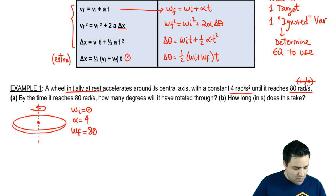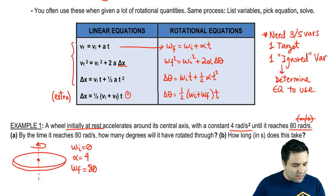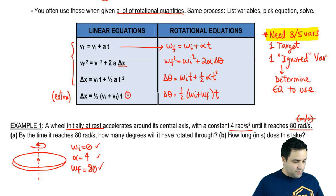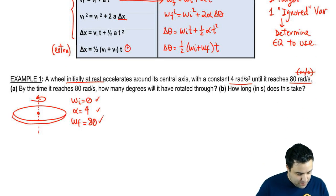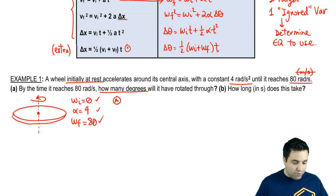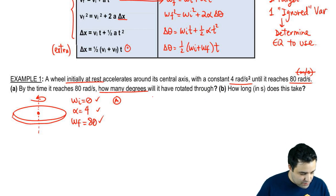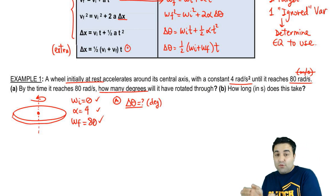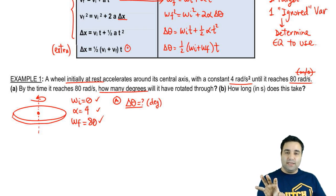As I mentioned, you can tell that you're supposed to use this because you start getting a lot of rotational quantities. In this case, I already know three of them, so I know that I can already solve whatever I'm about to be asked. By the time it reaches 80, how many degrees will it have rotated through? It's asking for delta theta, but it wants the answer in degrees, which means I'm going to get it in radians because the equations always spit out delta theta in radians, and then you have to convert to degrees.